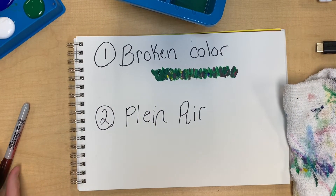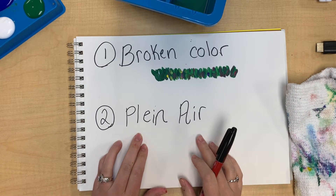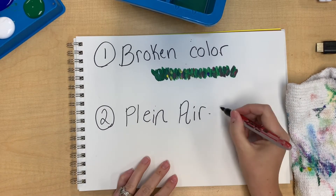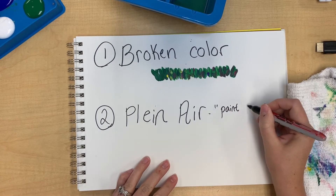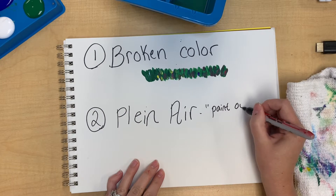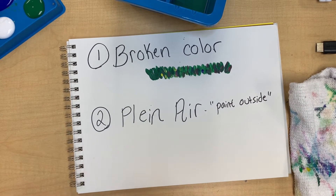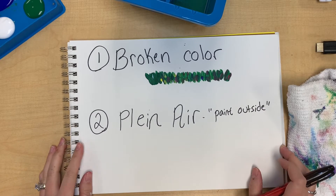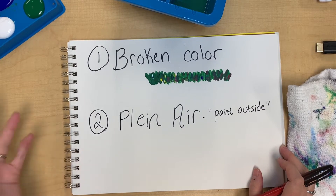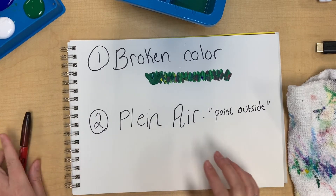The second technique is plein air. When we did our notes, we talked about how plein air means painting outside — it's a French term for painting outside. At this time period, artists were able to take their paint with them, so they didn't have to stay in the studio and use a palette; they could paint more on the go.